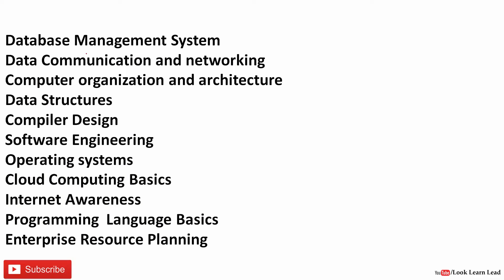The first important section is Database Management System. The maximum questions would be covered in database — it would cover SQL and also the transaction part. The second most important is Data Communication and Networking, which also includes questions from cloud computing, so you should be thorough with the basics of cloud computing. There will also be questions from Computer Organization and Architecture, Data Structures, and Compiler Design. Software Engineering and Enterprise Resource Planning are also important, with around 5 questions each.